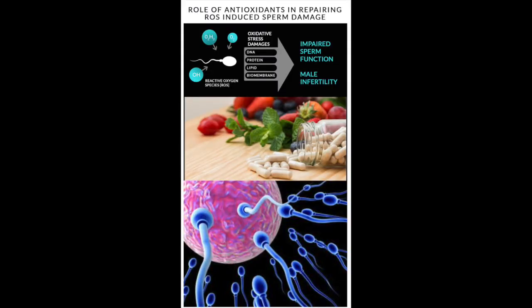Sperms can undergo oxidative stress or damage due to reactive oxygen species, and this can be prevented or treated by giving antioxidants like coenzyme Q10, lycopene, L-carnitine, vitamin C, and vitamin E. These are especially given for a period of three months and help improve the motility and sperm function to a certain extent.